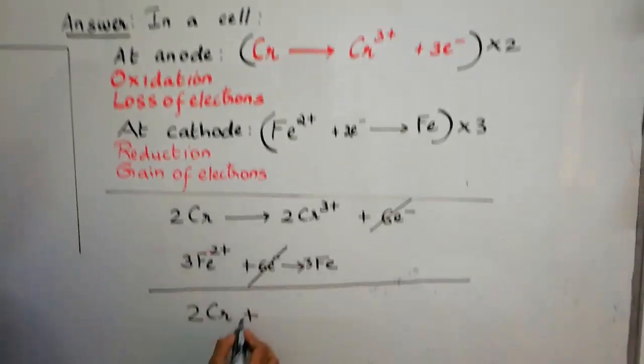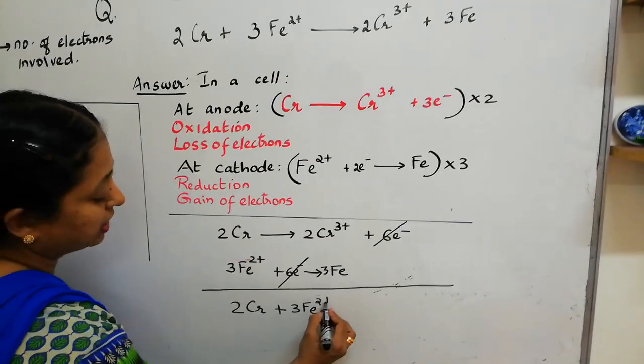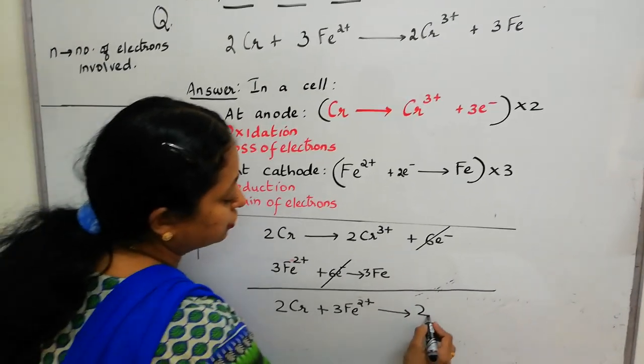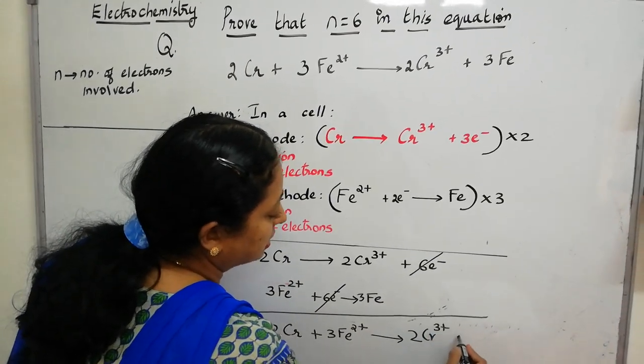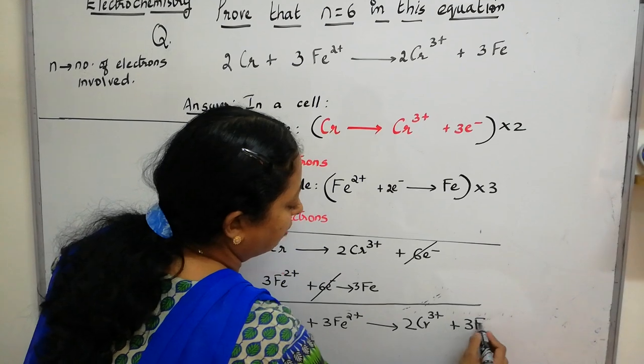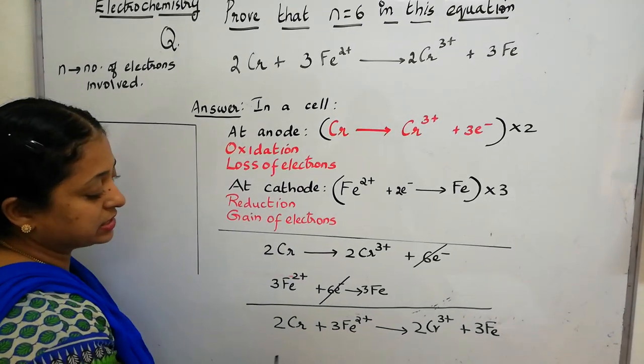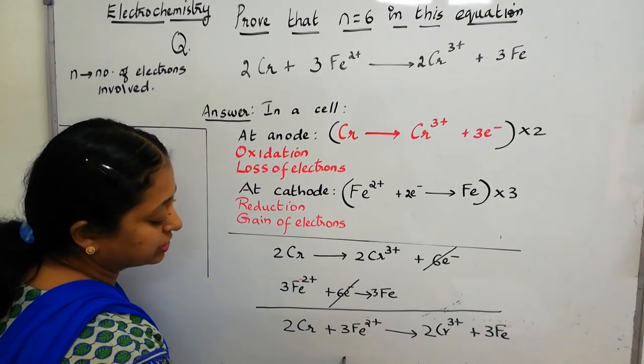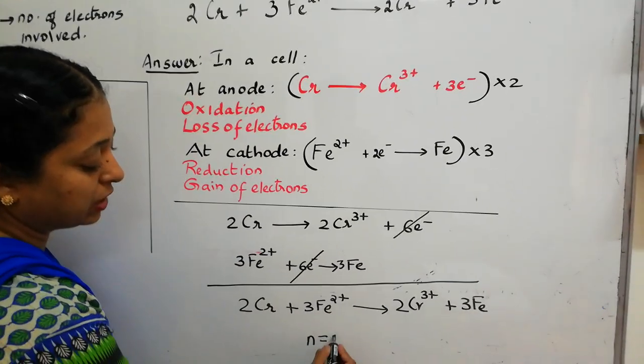That is, 2Cr plus 3 Fe 2 plus gives 2Cr3 plus plus 3 Fe. Which clearly indicates that total number of electrons involved in this process is equal to 6.